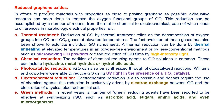Reduced graphene oxide is produced by reducing graphene oxide using different reducing agents and processes. The aim is to eliminate or minimize the oxygen functional groups present in graphene oxide. In thermal treatment, graphene oxide is heated at high temperature and oxygen is evolved in the form of carbon monoxide and carbon dioxide gases. Thermal annealing is carried out at elevated temperature in an oxygen-free environment, or by microwave heating or high-intensity light.